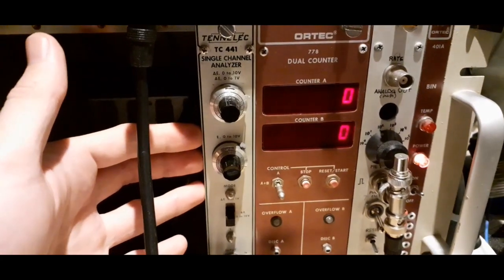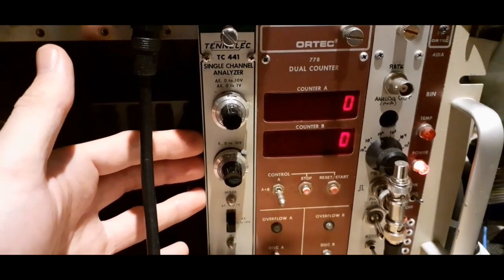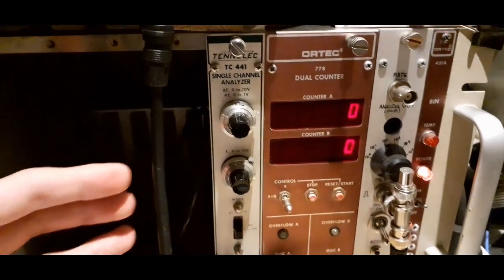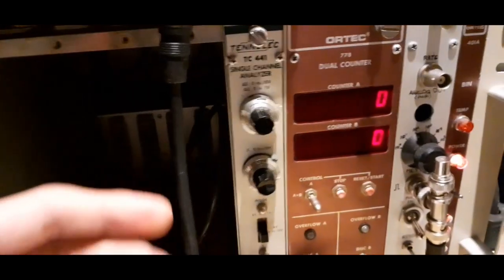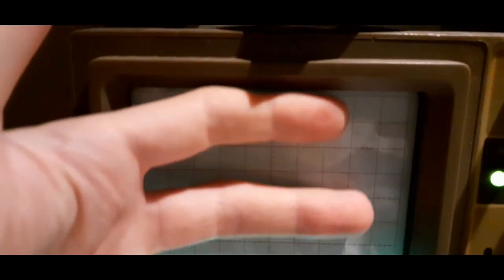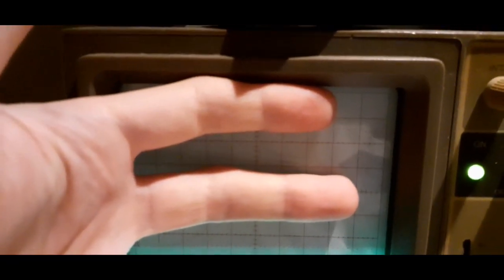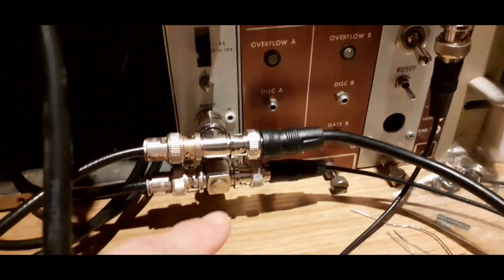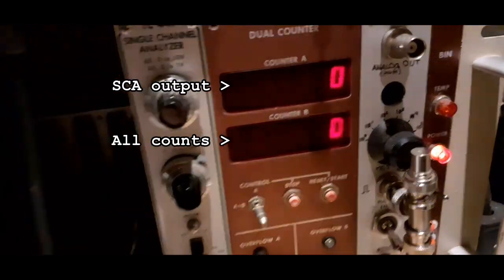Now the single channel analyzer here is the simplest form of pulse height analysis you can do. And it basically just lets you set a lower bound and a window size. And if the peak comes in between those two limits set, it gives a logic pulse out, just a standard 5 volt logic pulse, which can then be counted by a counter here.